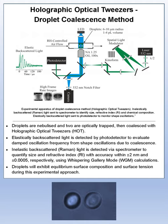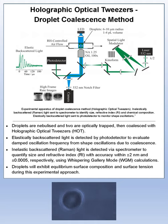For the first experimental approach, droplets are nebulized into a chamber, two are optically trapped and then coalesced into one. Elastic backscattered light is detected to evaluate oscillation frequency instigated from the event of coalescence. Raman spectroscopy is coupled with this technique to accurately quantify size and refractive index of the droplet. During the experiment, droplets will exhibit equilibrium surface composition and surface tension.